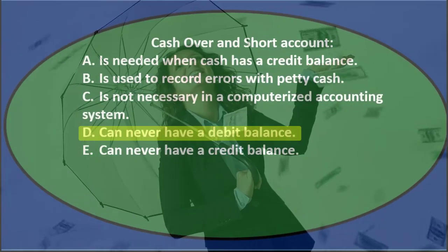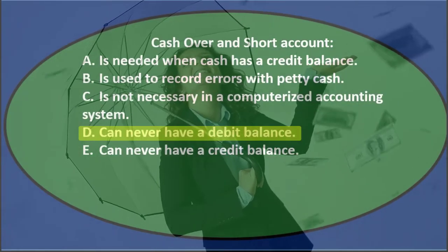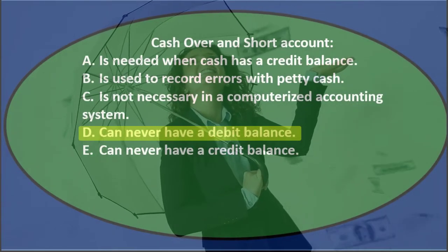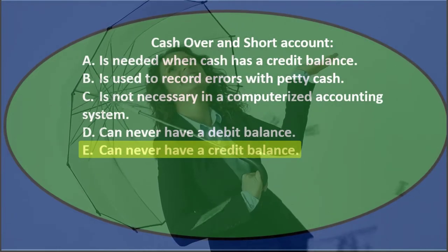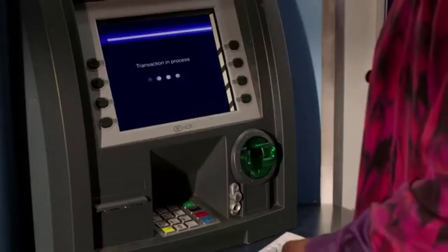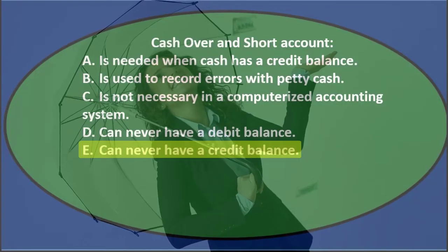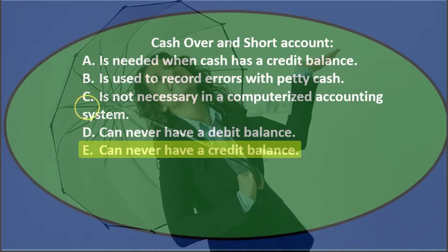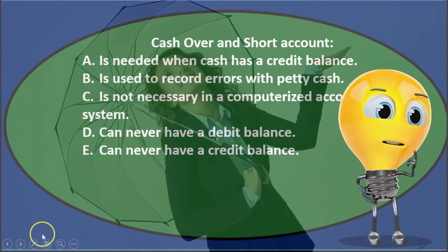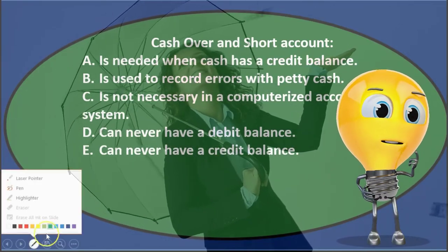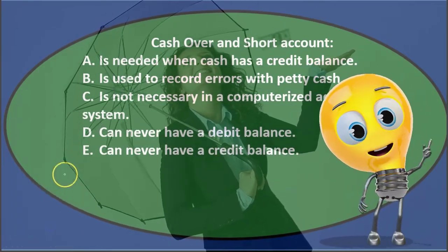D can never have a debit balance, or E can never have a credit balance. We'll go through this one more time and see if we can cross some of the items out with the process of elimination.